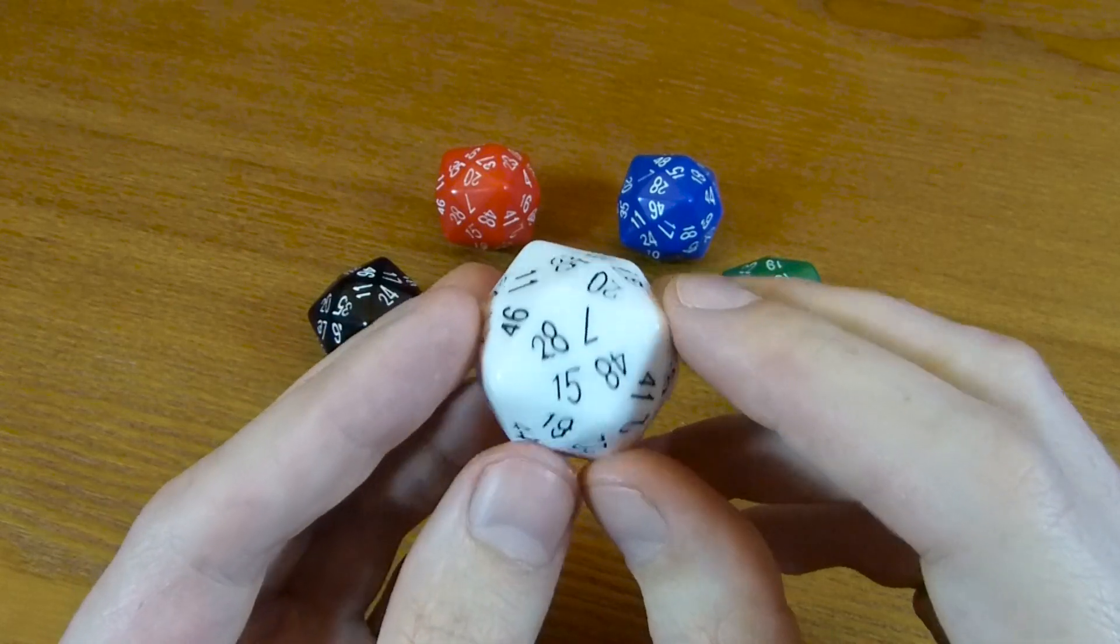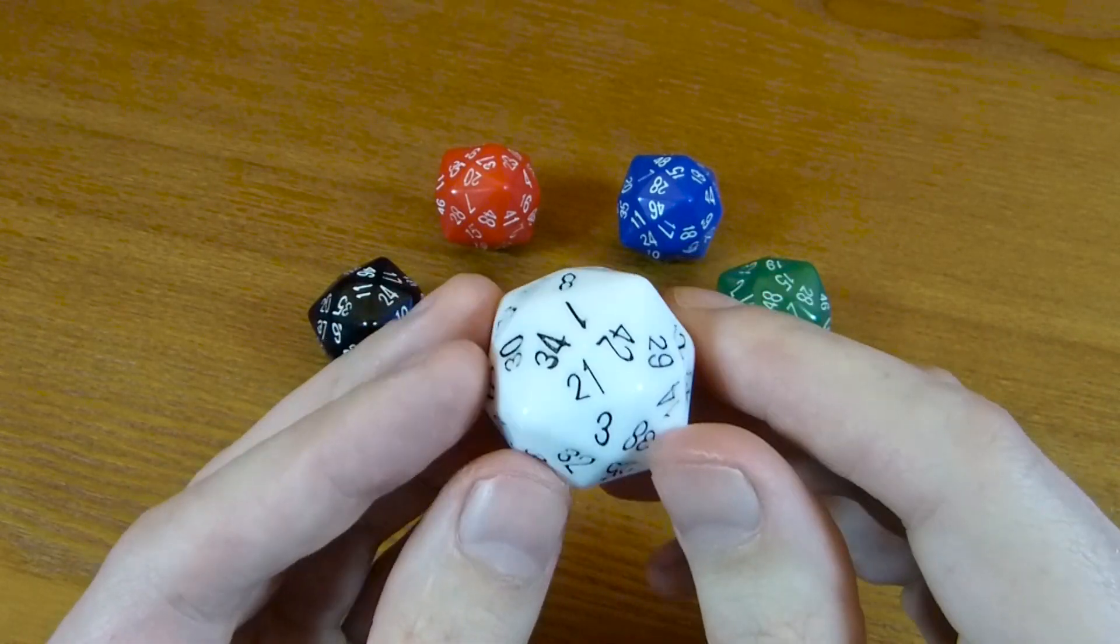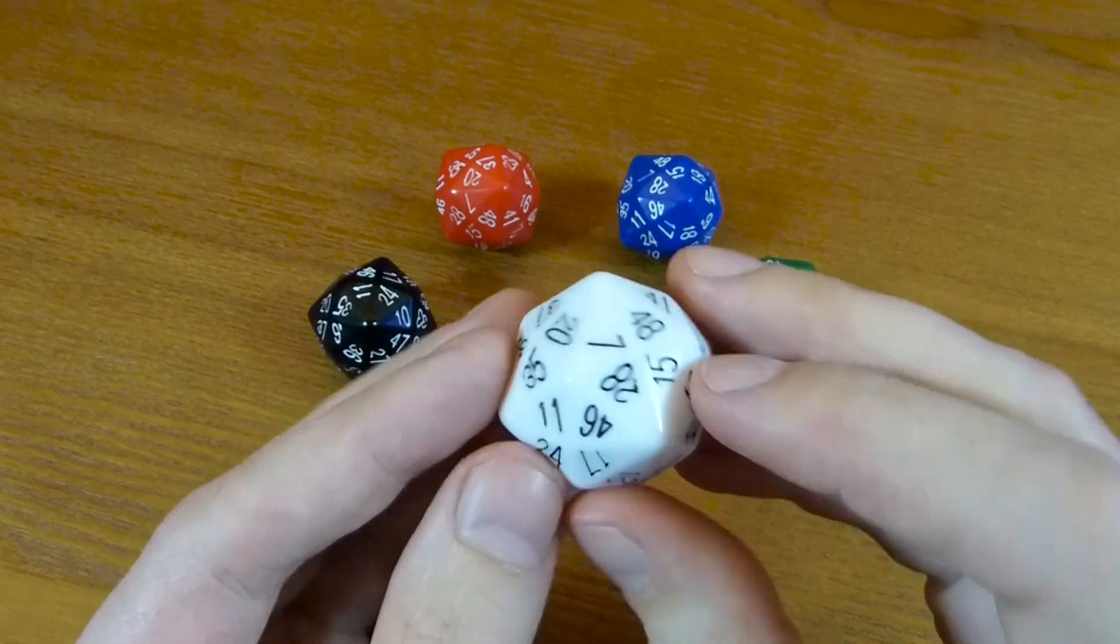So the numbers are very evenly spread out over the whole die. And this is the D48. Thanks for watching.